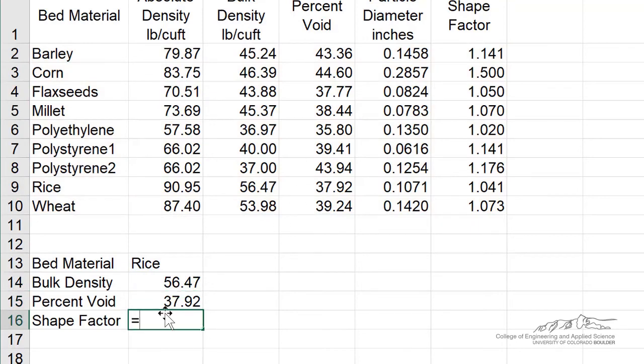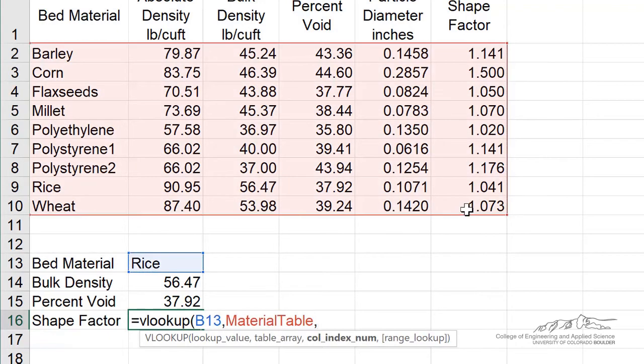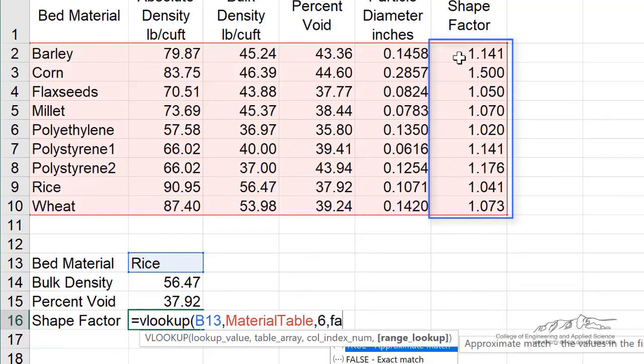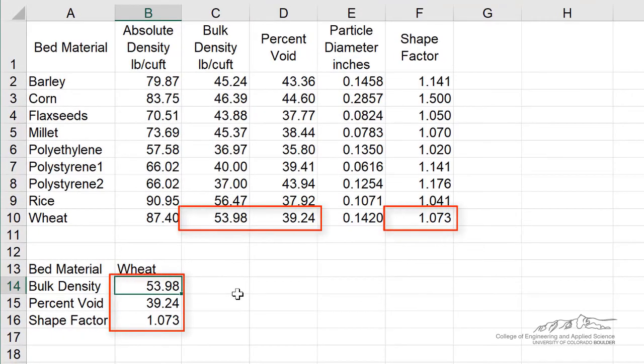So I'm going to set this back to false. I'm also going to then do the shape factor, which would be VLOOKUP of rice. Looking through our material array, shape factor is 1, 2, 3, 4, 5, 6, and I want to require an exact match. So that's how you can just kind of summarize, and then I can put in wheat here, and it just automatically updates. So that's the VLOOKUP function.